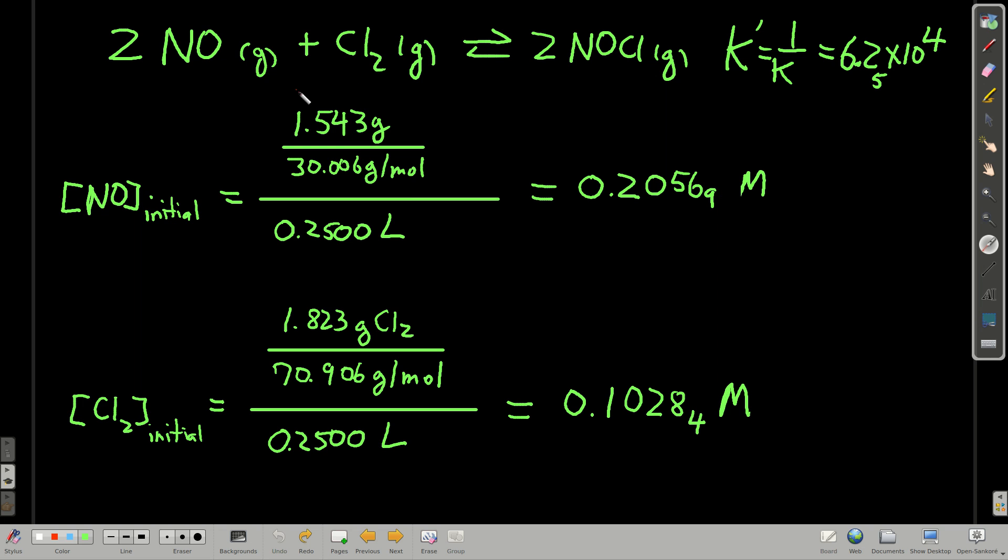Now, what we're going to say is, alright, the way we do this, the next kind of tool is to say, because this k is so big, we're going to figure out our initial concentrations of these reactants, the nitrogen monoxide and the chlorine, and say, let them all react. Let's say they just totally react and we make product, and then we start from there and go backwards.